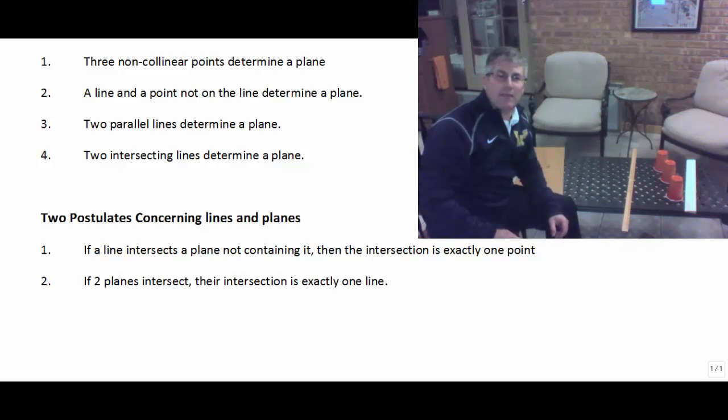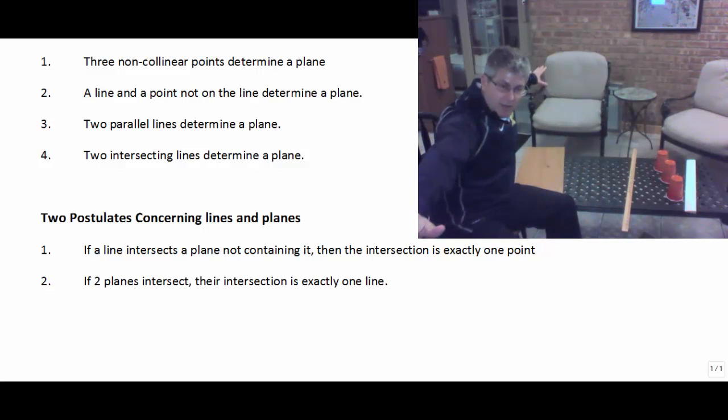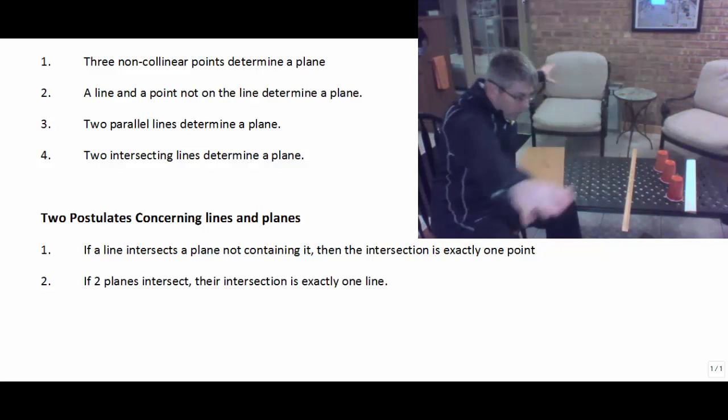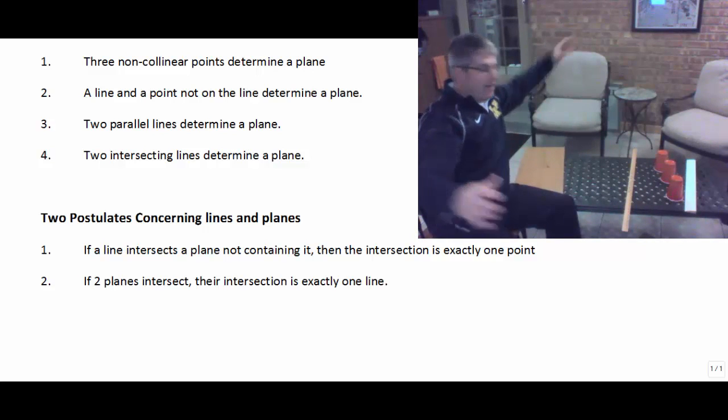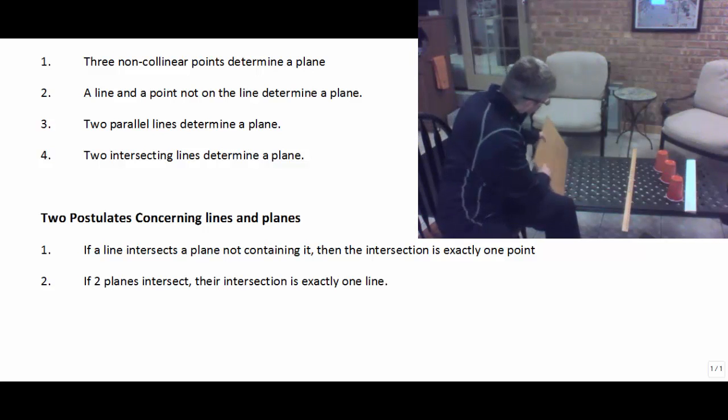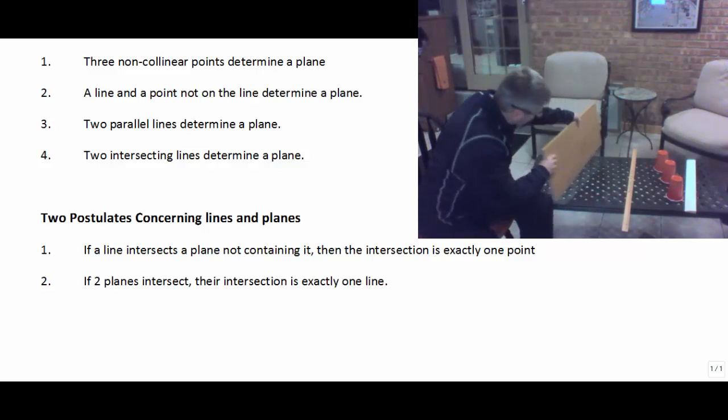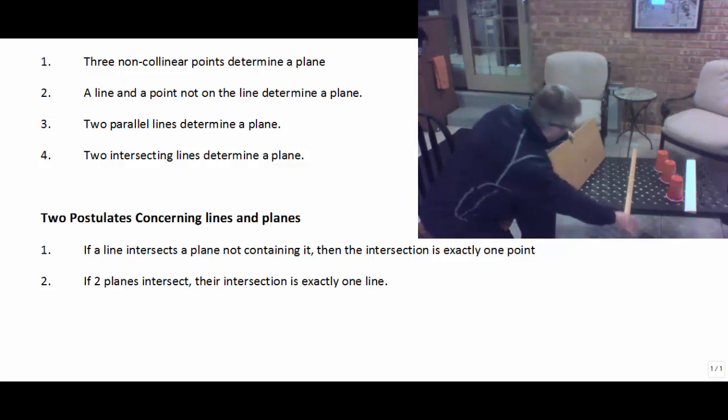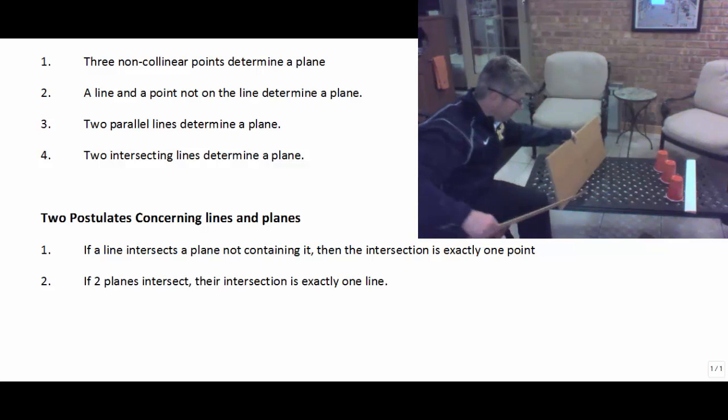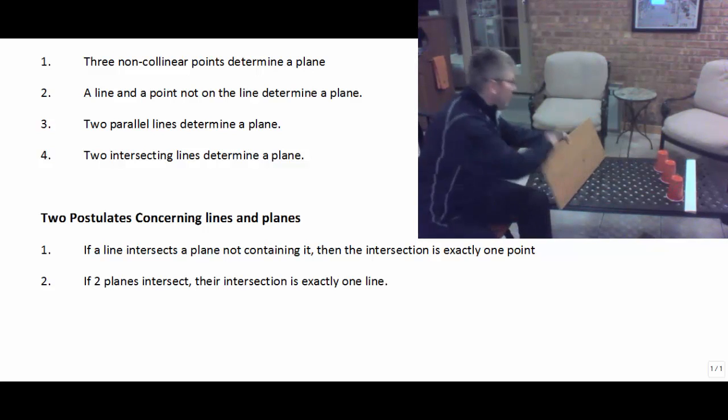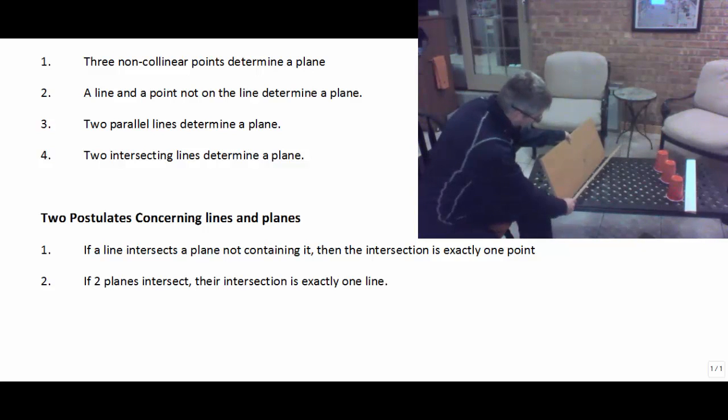Finally, if two planes intersect, their intersection is exactly one line. Keep in mind that planes extend infinitely in both directions, length and width, forever and ever. So when two planes intersect, they come together and their intersection is a line. In my tabletop, it intersects my wood piece here. That extends infinitely. The intersection is just going to be a line.